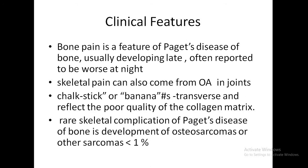Bone pain is a feature of Paget's disease; it usually develops late and is often reported to be worse at night. This pain can also come from osteoarthritis affecting the joints. Chalk-stick or banana fractures, which are transverse and reflect the poor quality of the collagen matrix, can occur. The rare skeletal complication is development of osteosarcomas or other sarcomas, with osteosarcomas having an increased incidence in males, but this complication is found in less than 1% of cases.